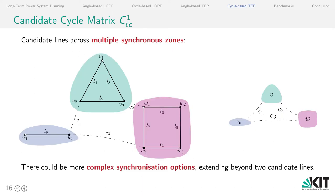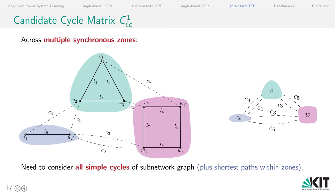The problem is that when we consider multiple synchronous zones. So a cycle is only introduced when we cross three or more subnetworks and this could lead to more complex synchronization options where we not only have to consider all simple cycles of the subnetwork graph where we aggregate all lines within a subnetwork to one node and then calculate all the cycles of those candidate lines that cross synchronous zones. And for each of the subnetworks, the shortest path is between the candidate lines.